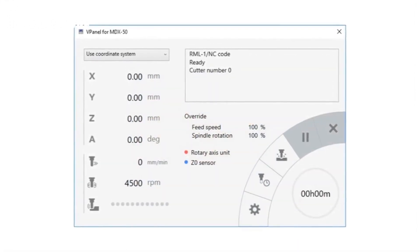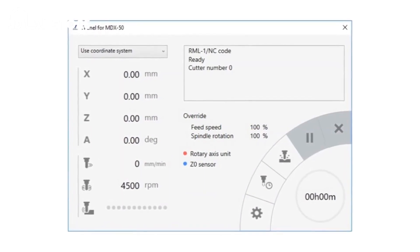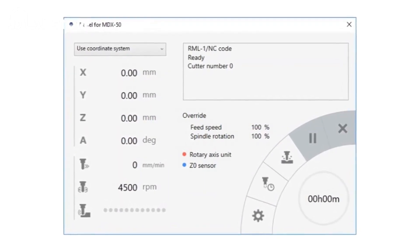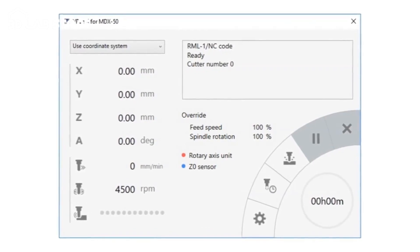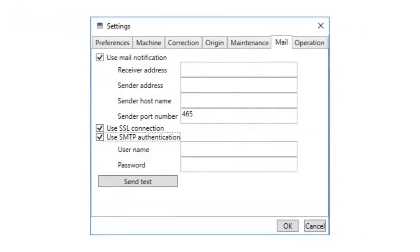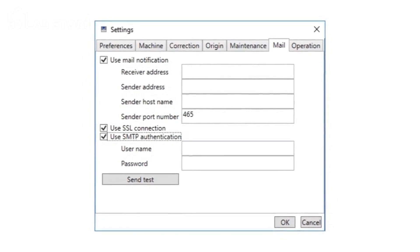The VPanel Virtual Control Utility offers a host of setup, calibration, and tool life management features. Because 3D models can take hours to produce, VPanel will even send email alerts to update you on the status of the mill.